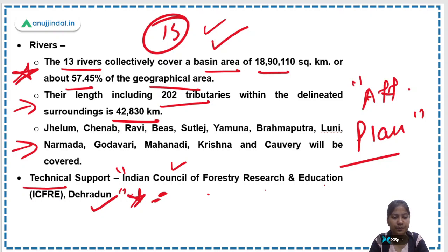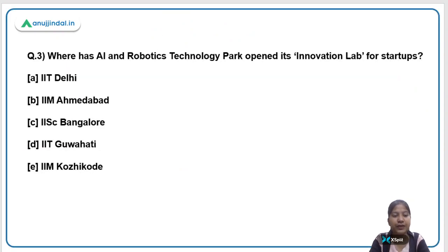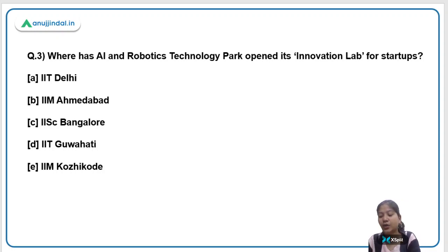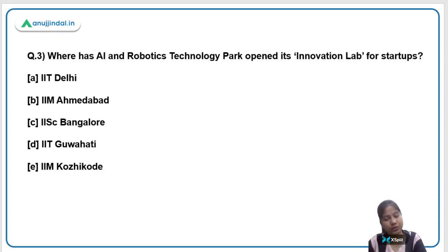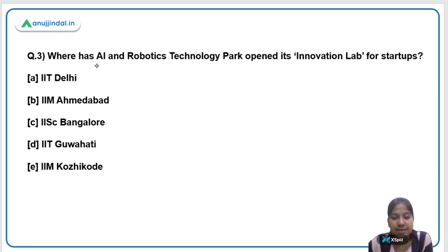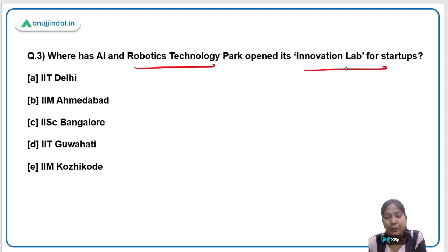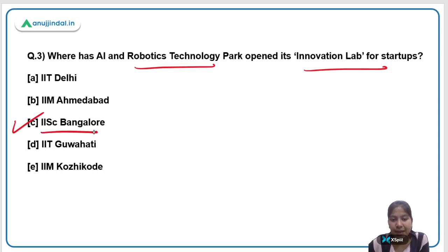If you feel any trouble understanding anything, you are welcome to ask questions in the comment section below or on the Telegram channel. The next question is: Where has the AI and Robotics Technology Park opened its innovation lab for startups? The right answer is IISC Bangalore — the Indian Institute of Science, Bangalore.